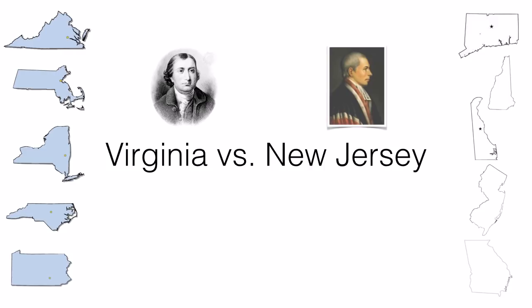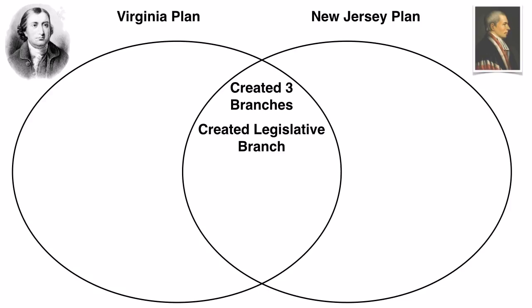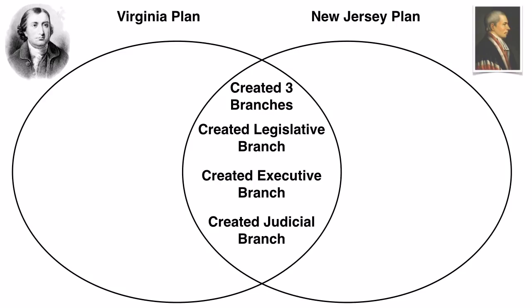This seems like a great place for comparing and contrasting. Both plans had things in common — they both separated powers into three groups so that no one person or small group would have all the power. One group, called the legislature, would make the laws. The second, called the executive branch, would make sure the laws were carried out. Finally, they agreed there should be a judicial branch to make sure the laws were carried out fairly. Under the Articles of Confederation, there was no executive or judicial branch, so both groups agreed there were some major changes to be made.